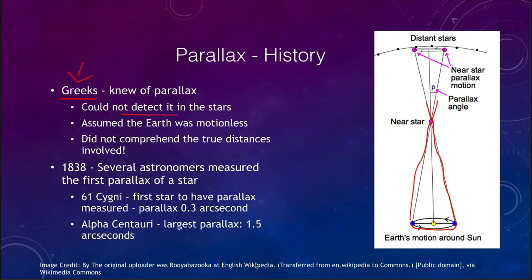Using the scientific method, they concluded the Earth must be motionless. Actually, it was one of two things: either the Earth was motionless and that would explain why no parallax occurred, or the distances were just so tremendous that the parallax angle was so tiny we could not possibly measure it. And that was the case — the Greeks simply did not comprehend the true distances involved in space.